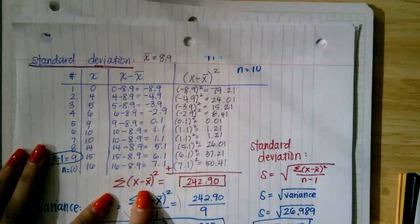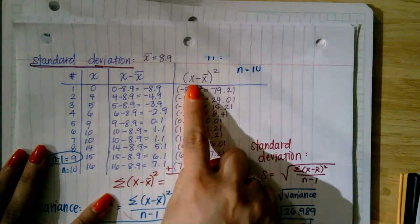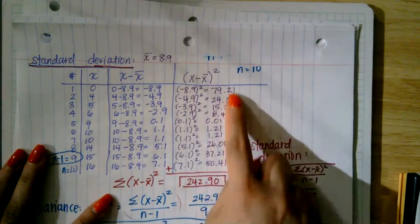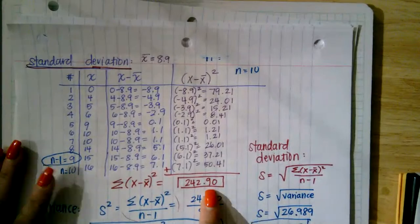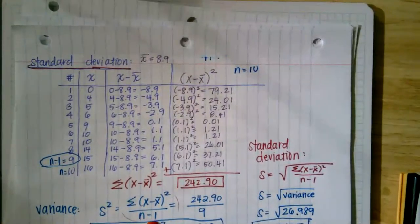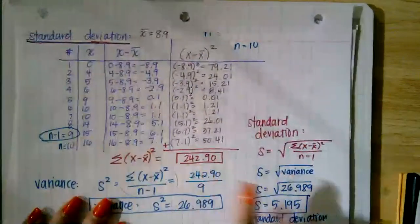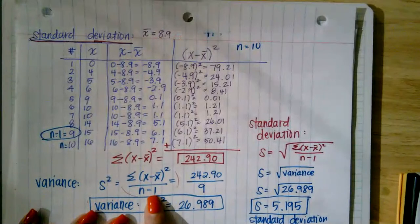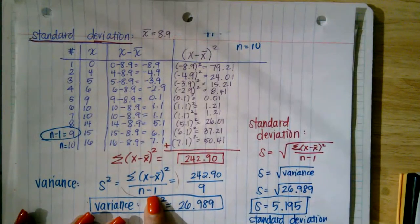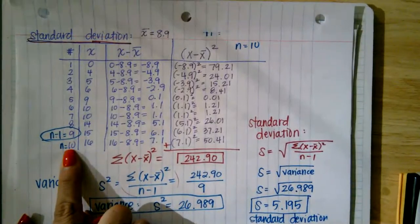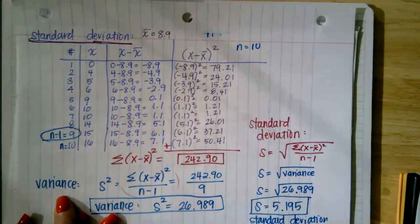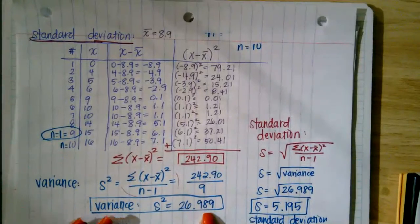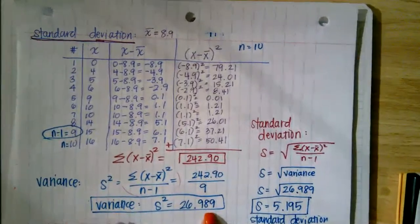I take the summation of the squared column, which gives me 242.90. Now I take an average of this — the variance — dividing by n minus one because this is a sample, not a population. So 242.9 divided by nine gives me a variance of 26.989. Variance is an average of the squared distances, and I need it to find standard deviation.